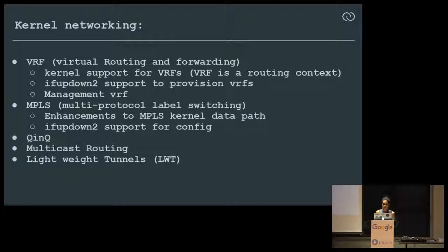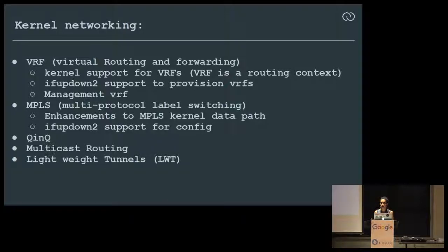MPLS is another label switching protocol sometimes needed in data centers or other environments. We enhanced the kernel MPLS data path, and ifupdown2 also has support to configure or enable it per port. Other features include QnQ, multicast routing, and lightweight tunnels. Lightweight tunnels allow configuring network tunnel interfaces without creating a net device — solving the net device scale problem. On a NOS, creating a thousand VXLAN tunnel endpoints would create a thousand VXLAN devices and that won't scale. With LWT you can move to a single VXLAN device.